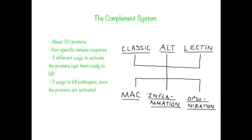You have three ways to activate the proteins: the classic pathway, the alternative, and the lectin pathway. There are also three ways to kill pathogens once the proteins are activated: the MAC or membrane attack complex, the inflammatory response which involves histamines, and opsonization which involves phagocytes and macrophages.